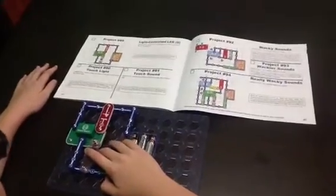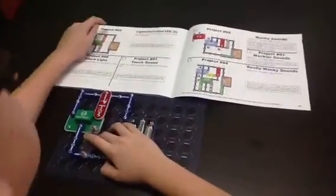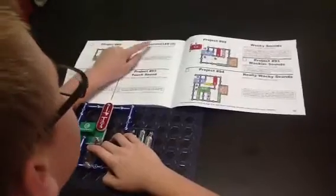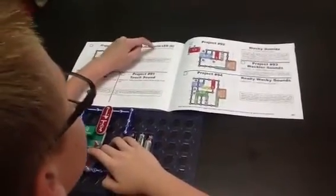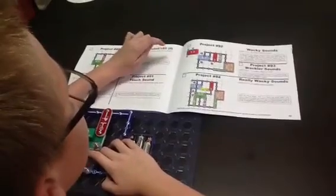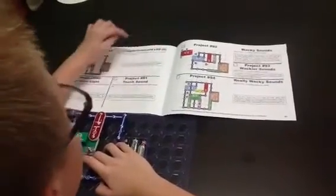Hi, my name is Jeno and I got something new here. This is Project 89, Light Controlled LED 2. The objective is to build a circuit that turns an LED on and off if there is light present.